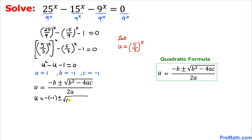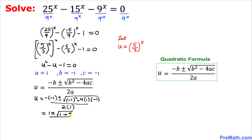Filling in the quadratic formula: u equals negative b, which is −(−1), plus or minus the square root of b² − 4ac. That gives us 1 plus or minus the square root of (1 + 4), all divided by 2 — so u = (1 ± √5) / 2.